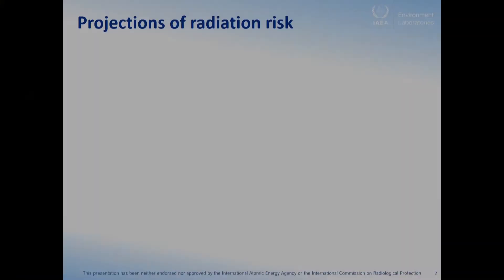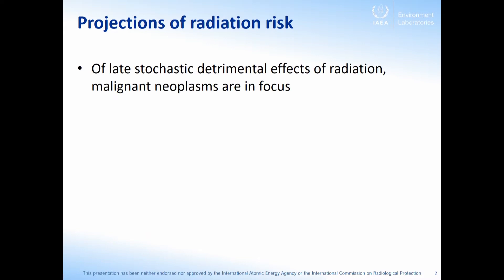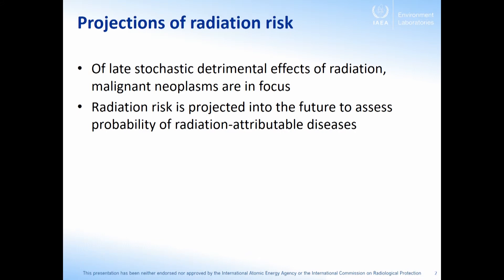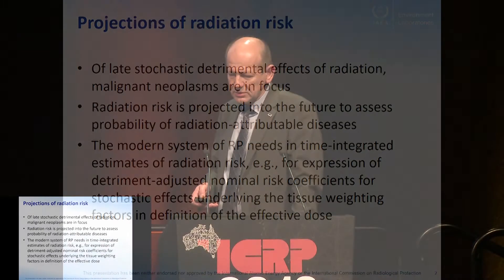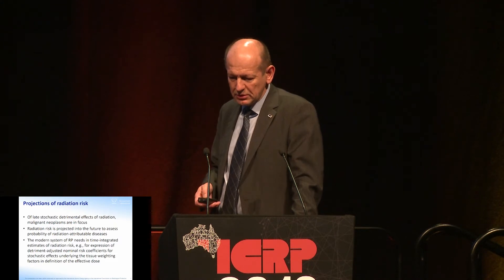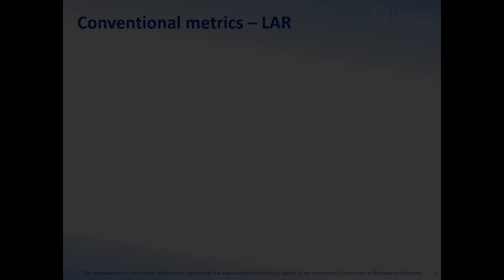So why do we need projecting radiation risks? Because of late stochastic detrimental effects of radiation, malignant neoplasms are in focus and we need to project risks for them into the future to assess the probability of radiation-attributable diseases, mortality, or other outcomes of interest. The modern system of radiation protection depends on time-integrated estimates of risk — for example, the definition of effective dose is based on detriment-adjusting nominal risk coefficients for stochastic effects, calculated using these risk metrics.